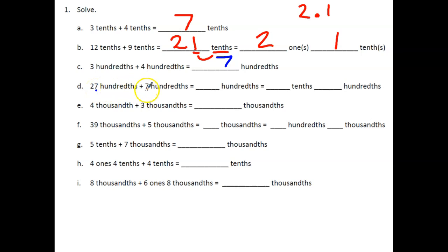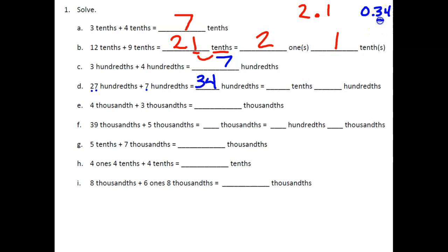Now we step it up a little — we need to regroup. We have 27 hundredths plus 7 hundredths. Seven hundredths plus 7 hundredths is 14 hundredths, which gives us a 1 in the tenths place and a 4 in the hundredths place. Then 27 plus 7: counting up seven more gives us 34. So 20 hundredths plus 14 hundredths is 34 hundredths, which looks like 3 tenths and 4 hundredths.